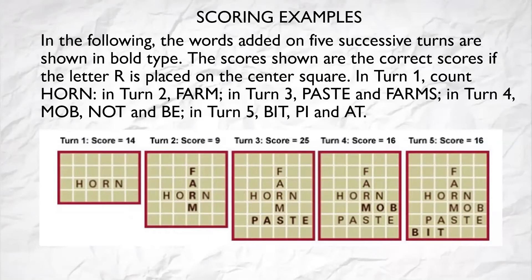Scoring Examples. In the following, the words added on 5 successive turns are shown in bold type. The scores shown are the correct scores if the letter R is placed on the center square. In turn 1: horn. In turn 2: farm. In turn 3: taste and farms. In turn 4: mob, not, and beat. In turn 5: beat, pea, and act.